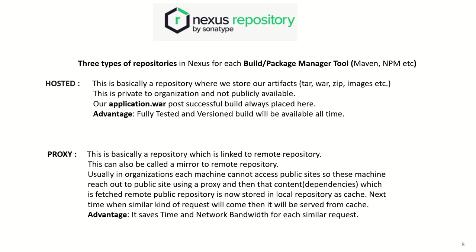If anyone wants to perform load testing or performance testing, they can download from this Nexus repository, deploy on their server, and perform testing. The second type is proxy. Proxy is a repository linked to a remote repository. In organizations, each machine cannot access public sites directly — machines reach out to public sites using a proxy. Content or dependencies fetched from the remote public repository are stored in local repository as cache. Next time a similar request comes, it is served from cache. The advantage is it saves time and network bandwidth.